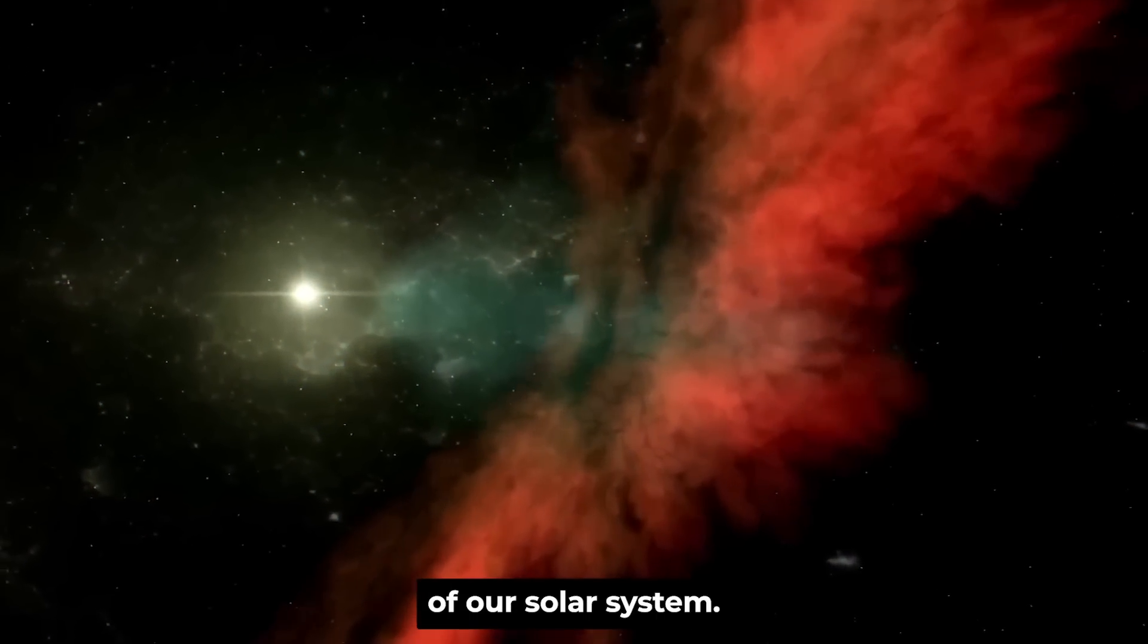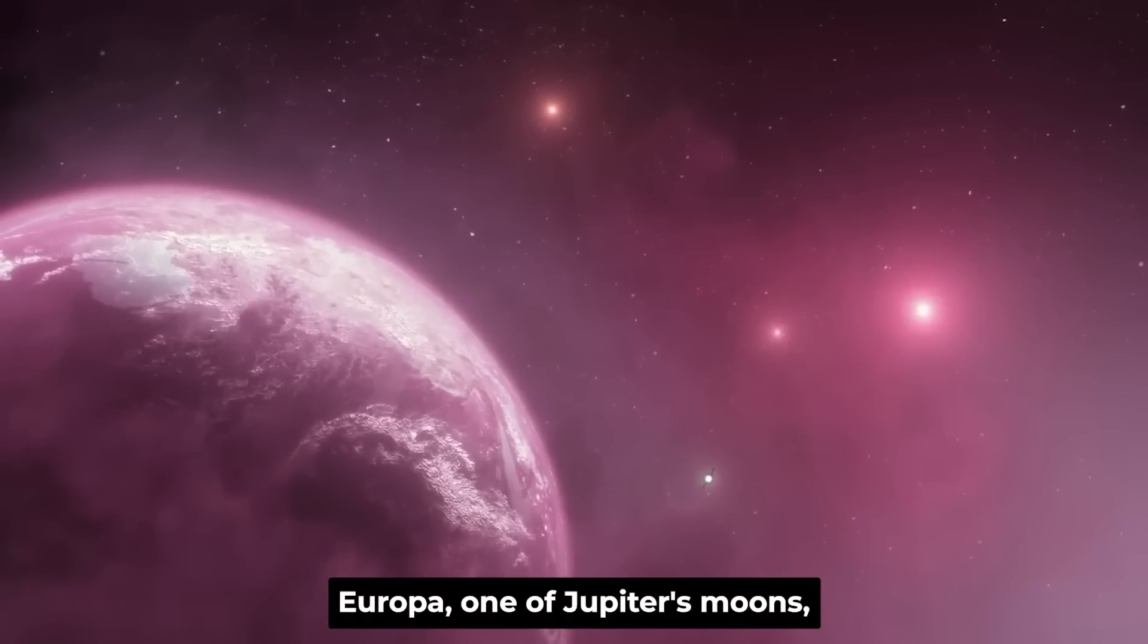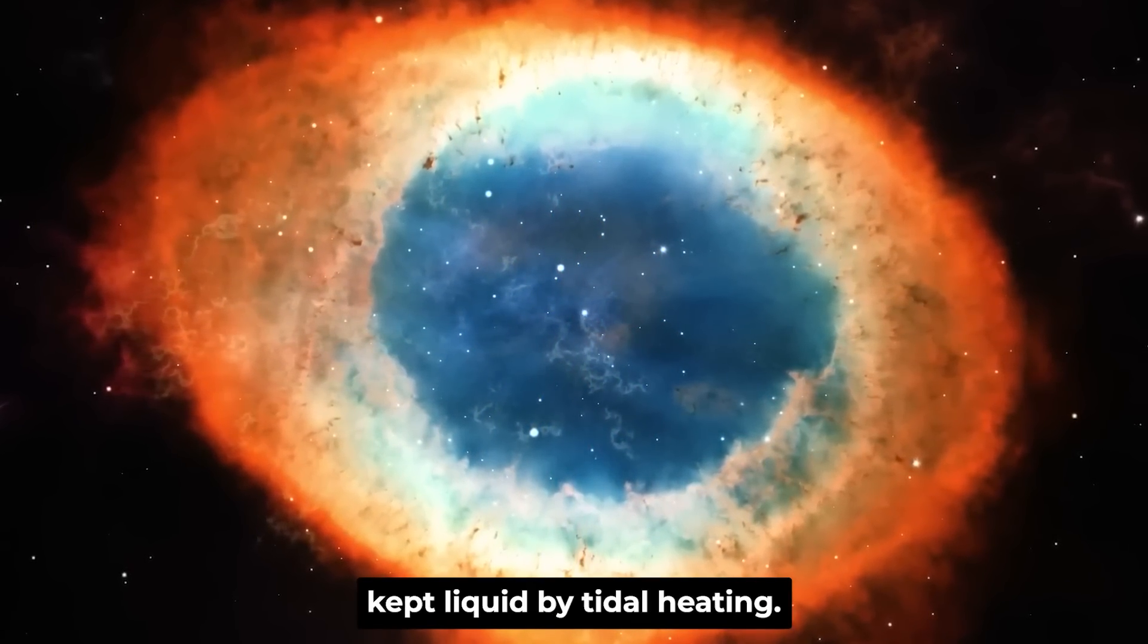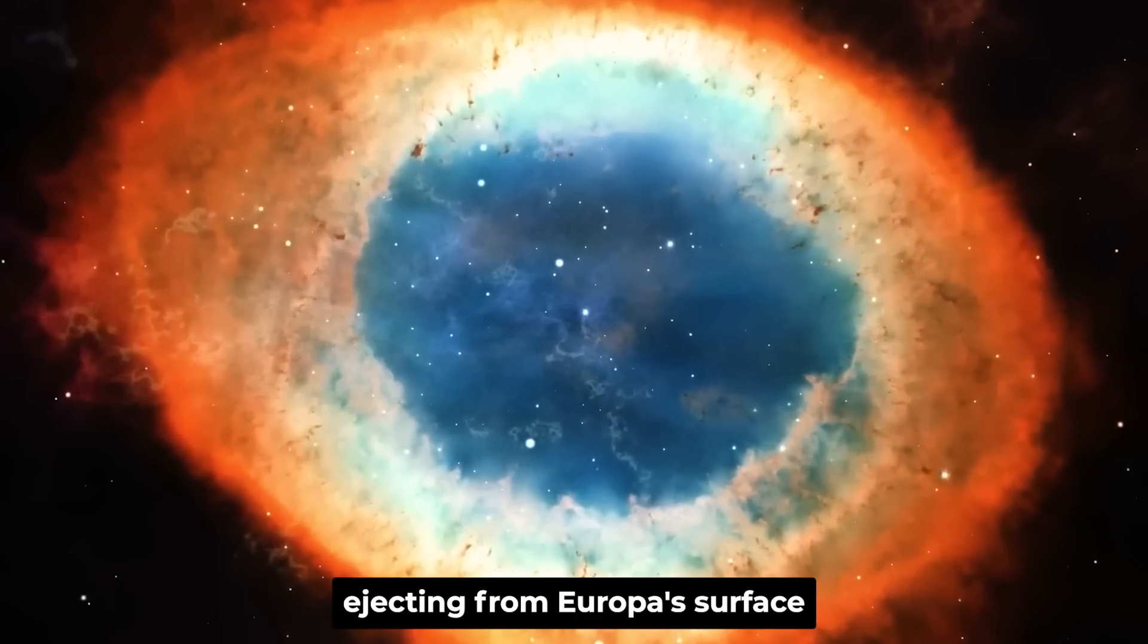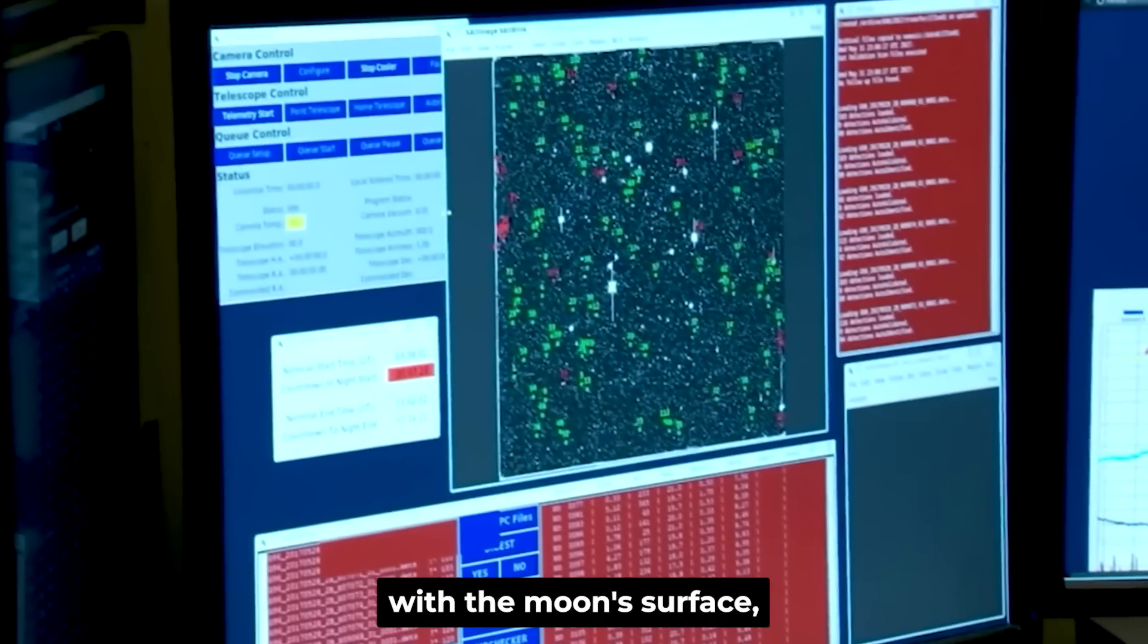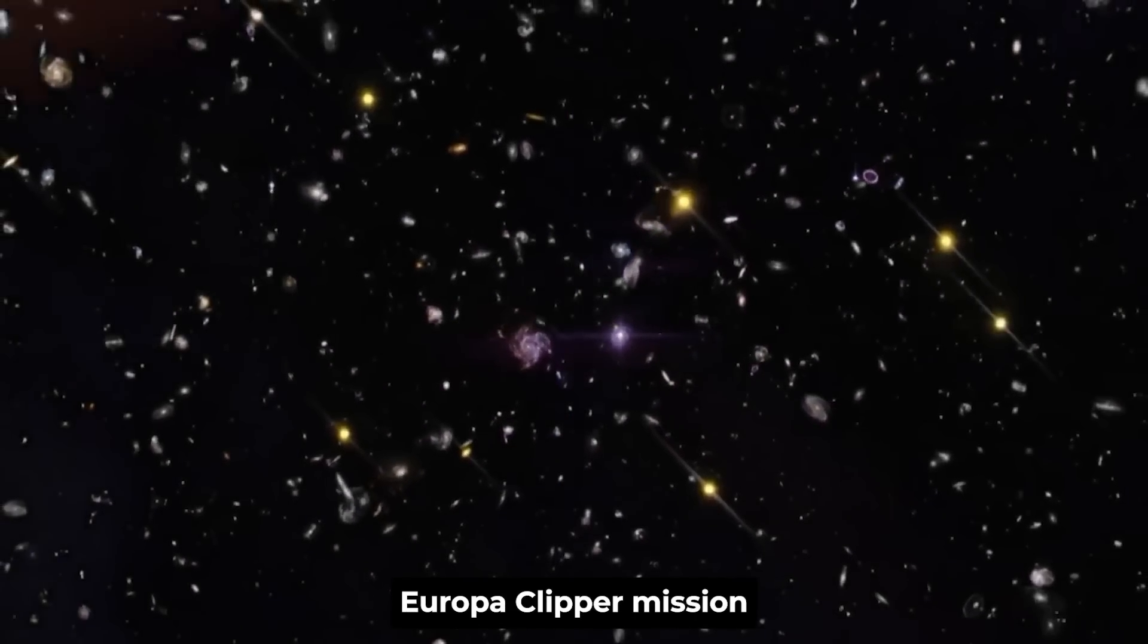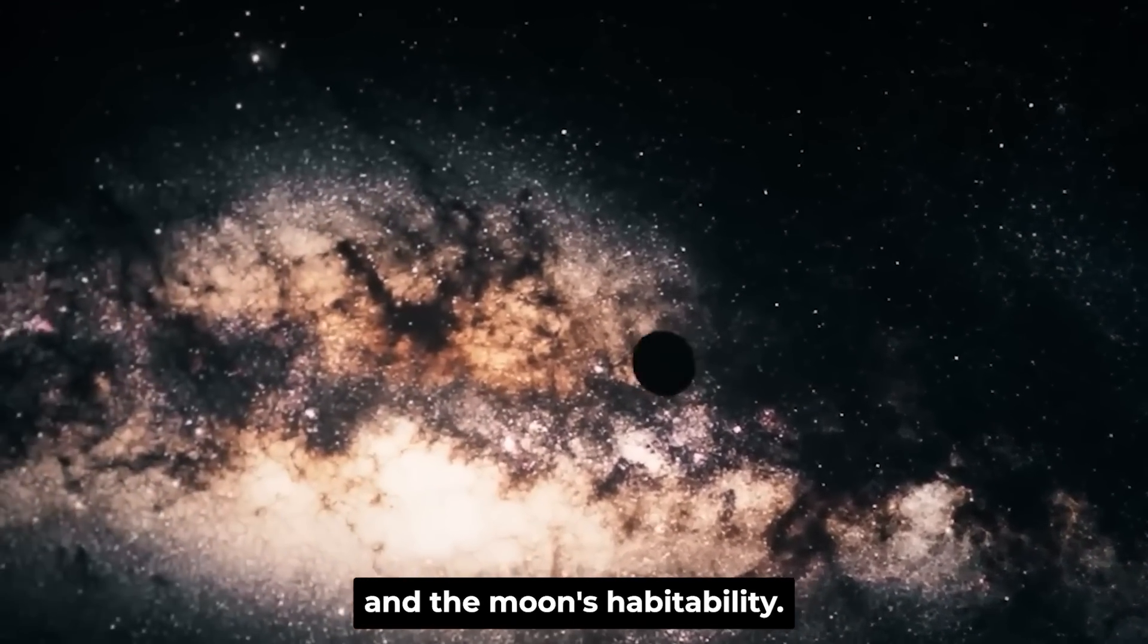The ocean worlds of our solar system: Europa's subsurface ocean. Europa, one of Jupiter's moons, is believed to have a salty ocean beneath its icy surface, kept liquid by tidal heating. Observations by the Hubble Space Telescope of water plumes ejecting from Europa's surface suggest that this ocean may be interacting with the moon's surface, potentially offering conditions suitable for life. Moreover, the upcoming Europa Clipper mission aims to further investigate these water plumes and the moon's habitability.